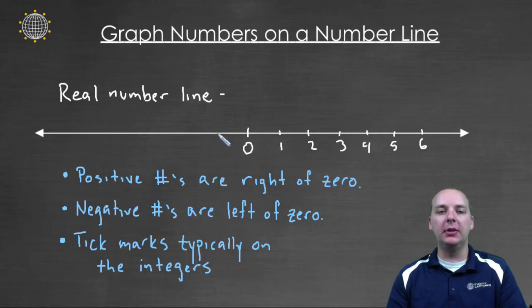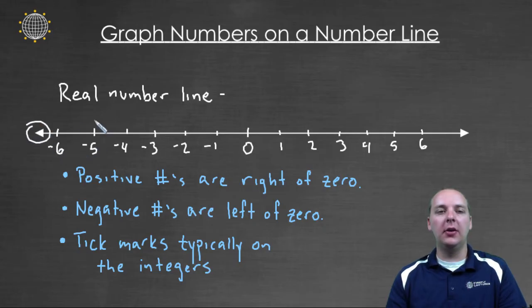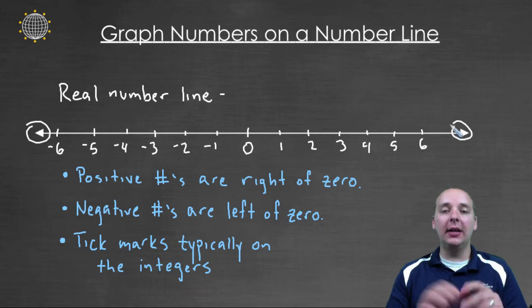And to the left of zero, we'd have negative one, negative two, negative three, negative four, negative five, negative six, et cetera. And it extends out beyond six, but at some point you just run out of space. And so if you'll see these arrows on the end right here, that indicates that the number line continues out farther than I'm even really drawing.